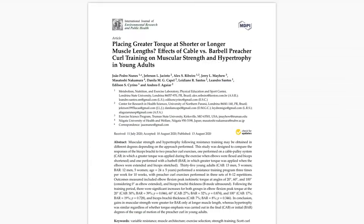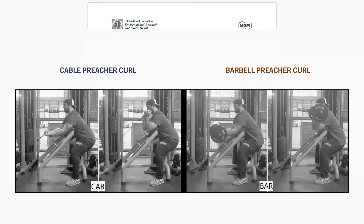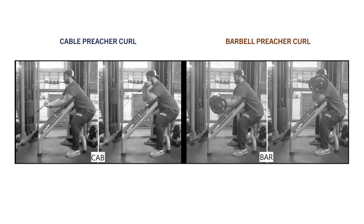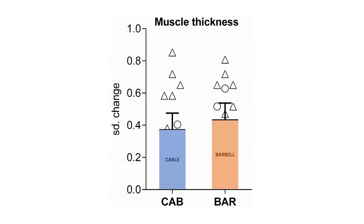For example, this study compared the effects of performing preacher curls with either a cable or barbell. The cable curls involve less tension at the bottom when the biceps are lengthened and more tension at the top when they are shortened, while the barbell curl has more tension in the bottom position when the biceps are lengthened and less at the top. It was found that biceps muscle thickness increased to a similar magnitude after both preacher curl variations.